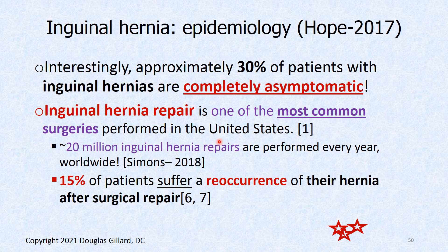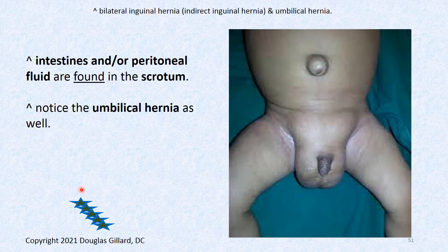What's the epidemiology? Inguinal hernias are the most common groin and abdominal hernias — 70% of all abdominal wall hernias occur in the inguinal region. The lifetime risk is 27% in men, 3% in women. Prevalence for inguinal hernia in men over 75 is almost 50% — it's 45%. About 30% of patients with inguinal hernias are completely asymptomatic. Inguinal hernia repair is the most common surgery performed in the United States — 20 million were performed in 2018.